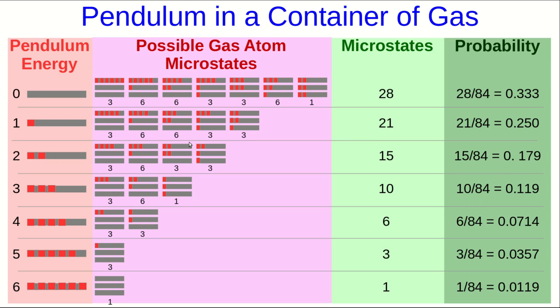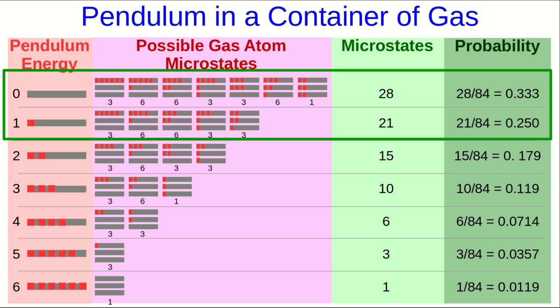Now think about the pendulum in the container of gas again. But suppose we had more particles of gas than three and a larger energy than six. Then there would be, again, far more ways to distribute that energy among the gas atoms than giving it all to the pendulum. And so just as we see here where the most likely macrostates are the one where the pendulum has very little energy, that would be the same, but far, far more extreme.